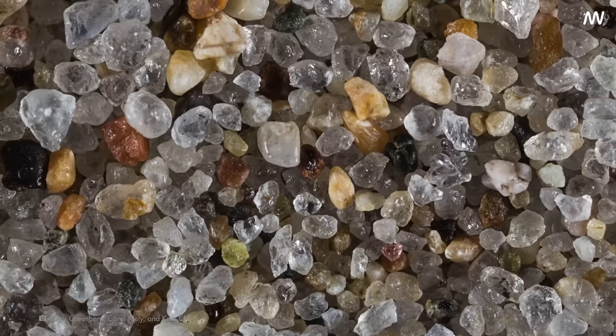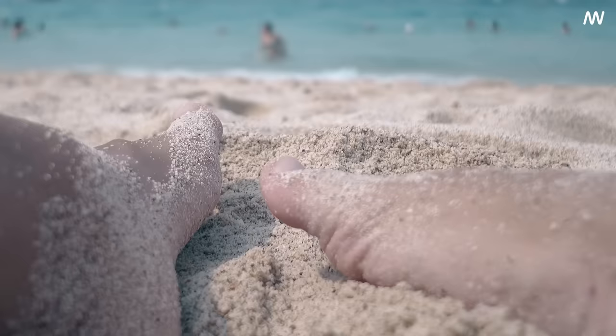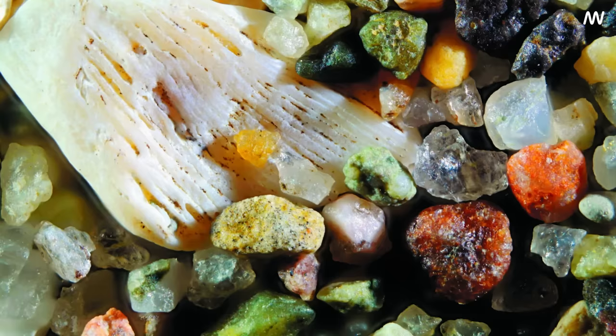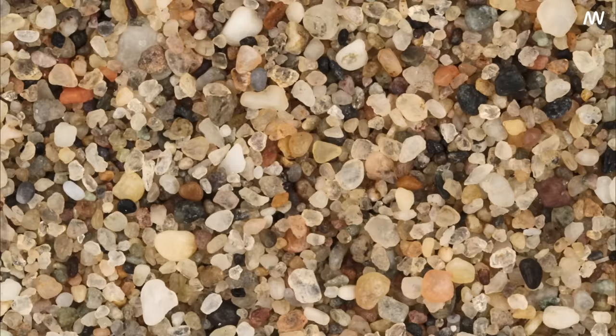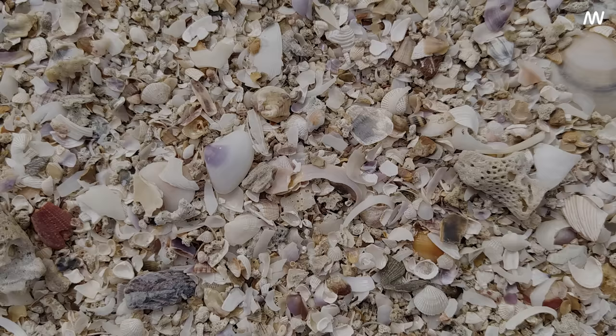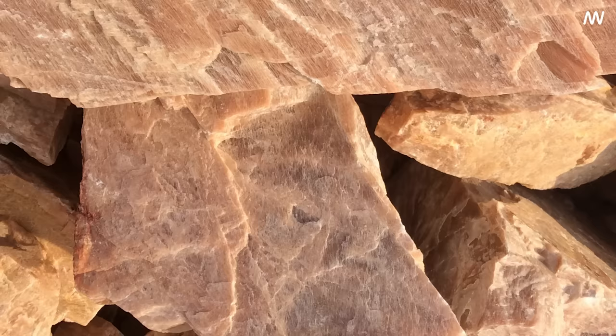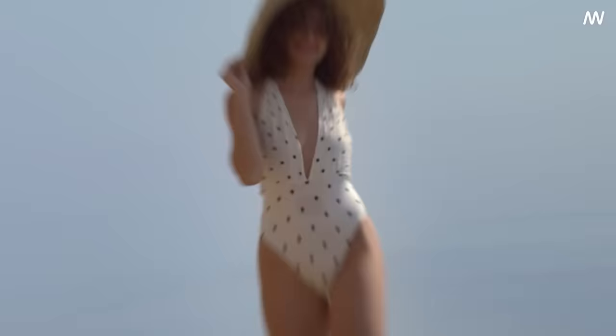But what exactly is sand? In the simplest terms, sand is tiny pieces of rocks and minerals. Not all sand is created equal — the sand you find at the beach is different from the sand in the desert, and that's because of how it's formed. Beach sand is often made up of quartz and shell fragments, while desert sand might contain more feldspar, a large group of rock-forming silicate minerals that make up over 50% of Earth's crust.